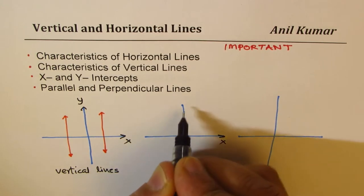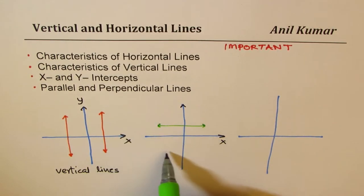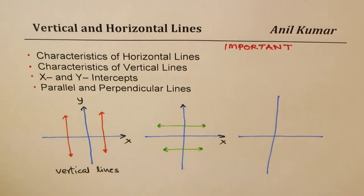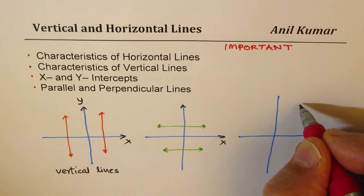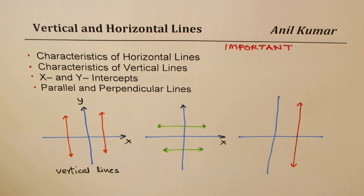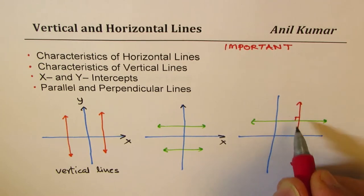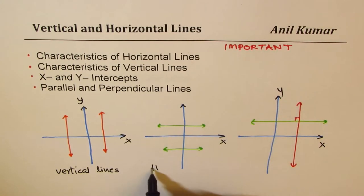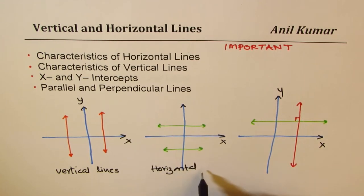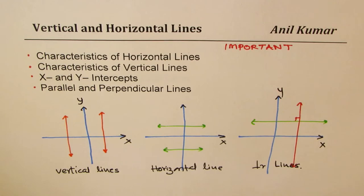When we say horizontal lines, we mean the lines which are parallel to the X axis. When we consider parallel and perpendicular lines, we'll concentrate more on vertical and horizontal lines. You can see that a vertical line is always perpendicular to a horizontal line — so these are always perpendicular.